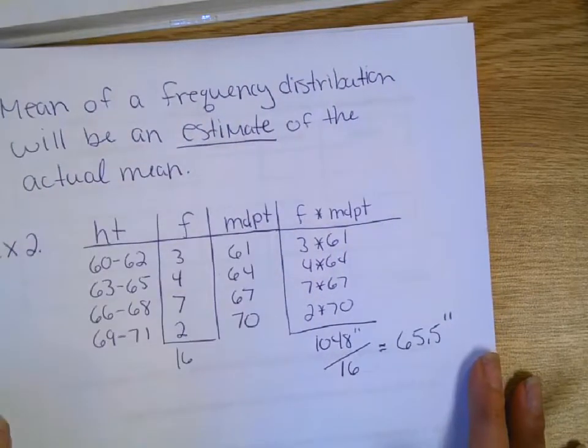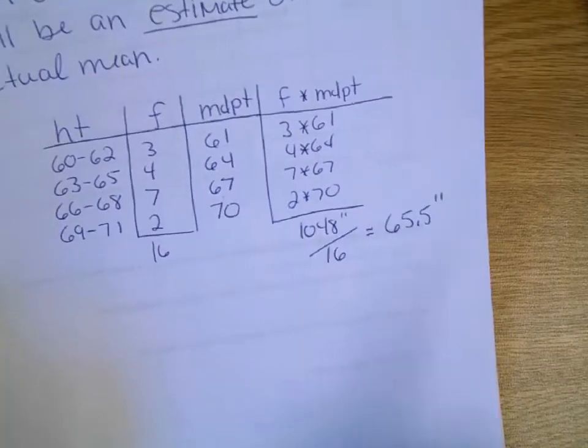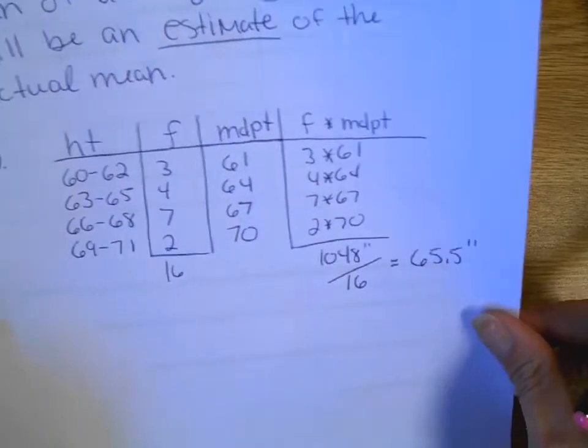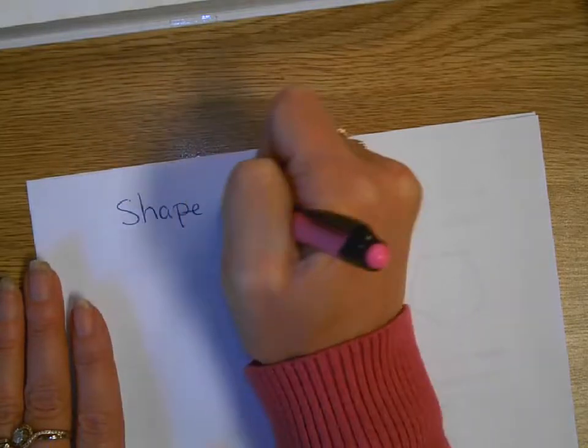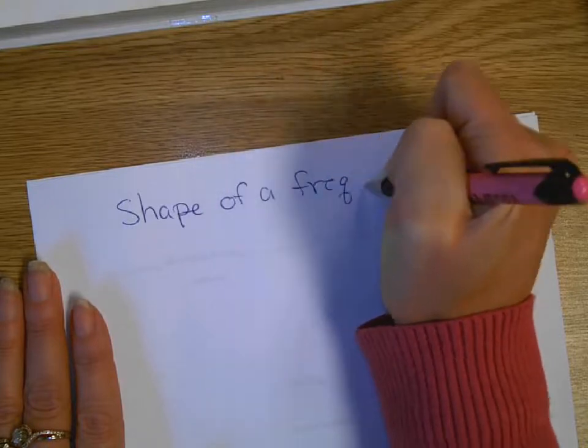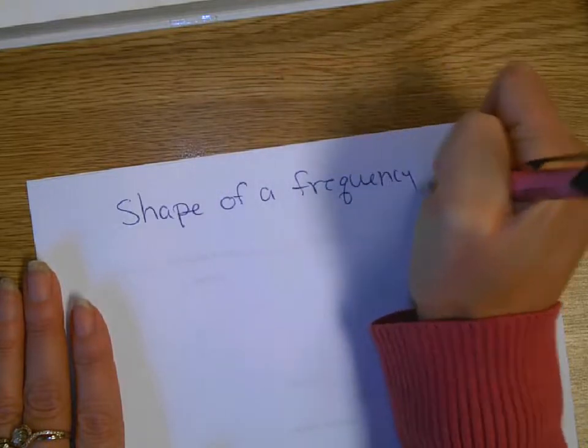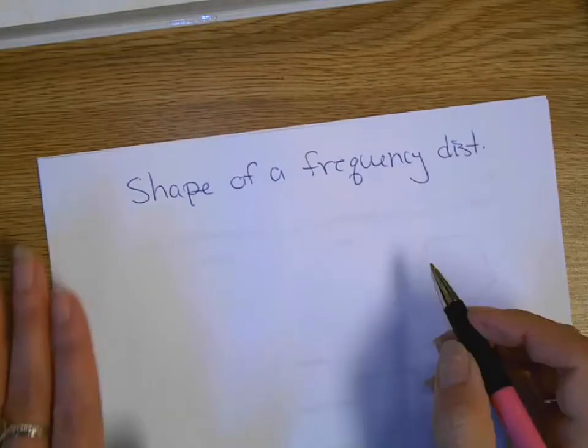Okay, we're going to be making some graphs on the calculator. You just made a bunch of graphs by hand. I'm going to show you the calculator does make nice histograms. And then you're going to have to tell me what shape the histogram is in. So, the shape of a frequency distribution.